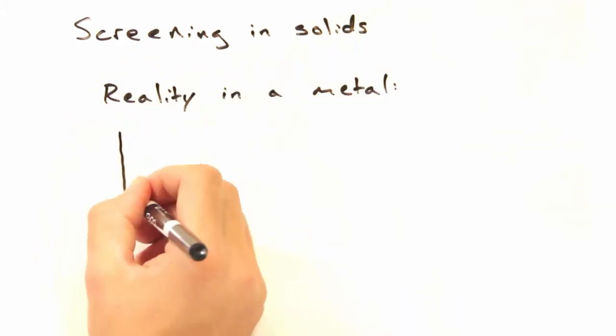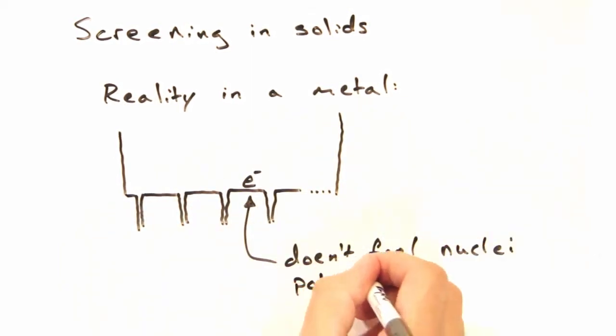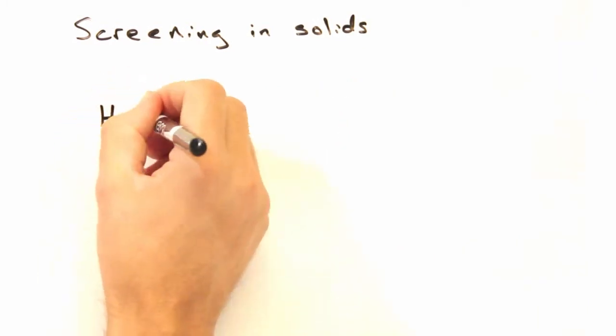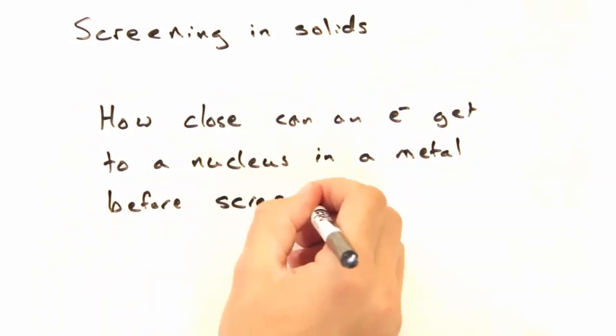In practice, real metals have potentials like this, where screening is highly effective unless the electron is very close to the nuclei. The question then is, how close can an electron get to a nucleus in a metal before screening breaks down?